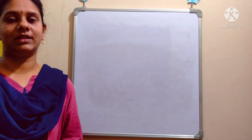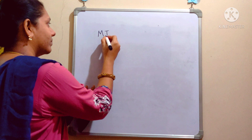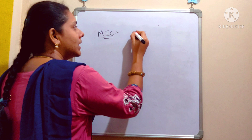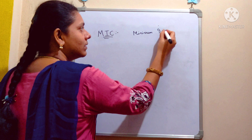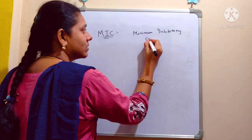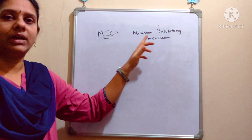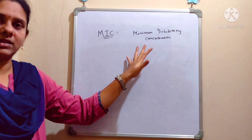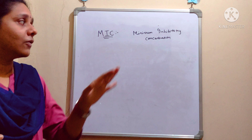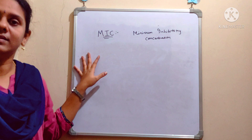Hello everyone. In today's video, let's discuss another technique of microbiology: MIC. MIC stands for Minimum Inhibitory Concentration — M for Minimum, I for Inhibitory, C for Concentration. The name itself suggests that the minimum concentration of the drug where the growth of the organism is inhibited can be detected with this technique.